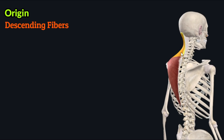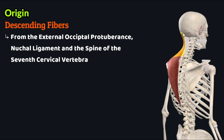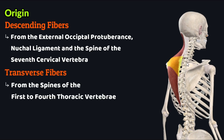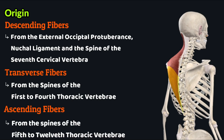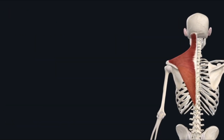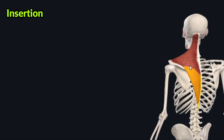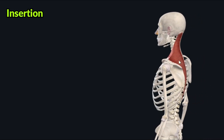These fiber groups originate from different areas. The descending or superior group of fibers originates from the external occipital protuberance, the nuchal ligament, and the spinous process of the seventh cervical vertebra. The transverse or middle group of fibers originates from the spinous processes of the first through fourth thoracic vertebrae, while the ascending or inferior group of fibers originates from the spinous processes of the fifth through twelfth thoracic vertebrae.